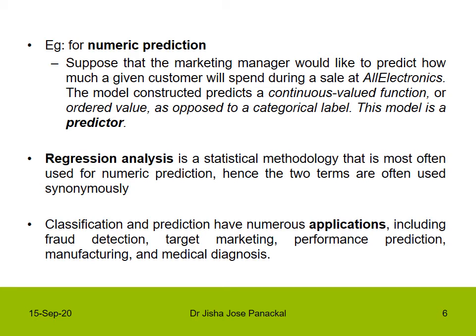For a numeric prediction example, suppose that a marketing manager would like to predict how much a given customer will spend during a sale at All Electronics. The model constructed predicts a continuous valued or ordered value, as opposed to a categorical label — this model is a predictor. Regression analysis is a statistical methodology that is most often used for numeric prediction, and hence the two terms are often used synonymously.